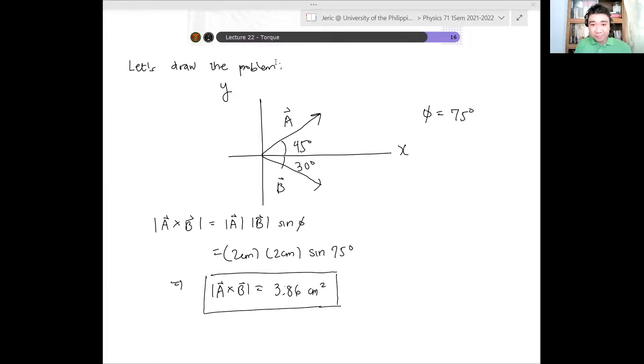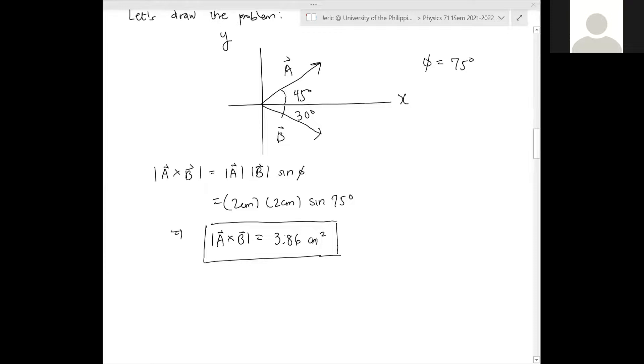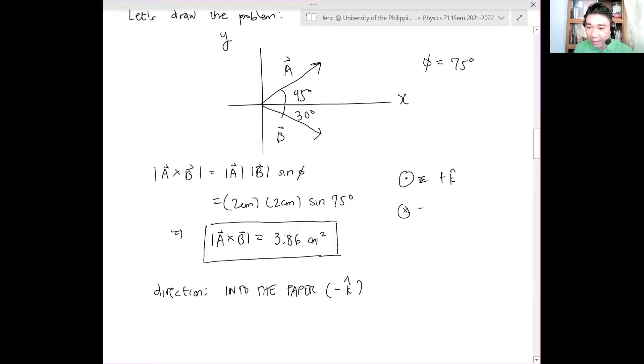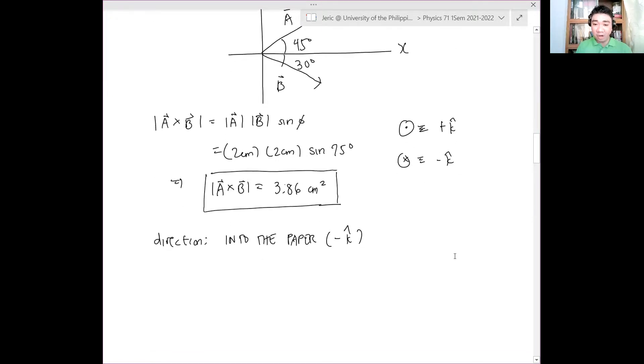And hence, from the right-hand rule, we see that A cross B, the direction is into the paper, which is given by negative K hat. For our right-handed coordinate system, XYZ, positive Z is out of the paper, so this is positive K hat. This is negative K hat. Do not forget that. The direction is into the paper or minus K hat.